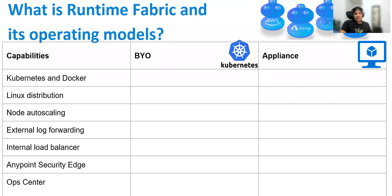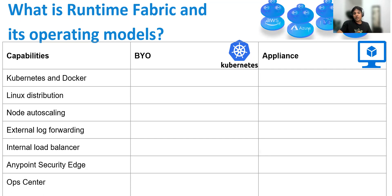So what is runtime fabric? Runtime fabric is basically a different model of the runtime. It comes in between our standalone runtime and the CloudHub runtime. CloudHub is completely hosted by MuleSoft, while standalone is completely hosted by the customer. Runtime fabric comes in between — we take some services from MuleSoft and some services are controlled or taken care of by the customer.